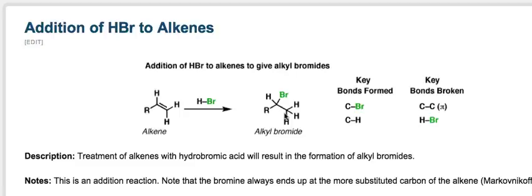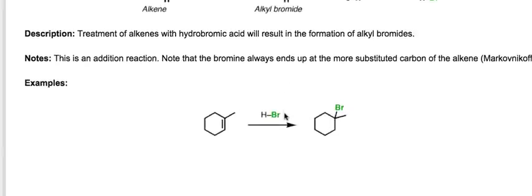Let's apply Markovnikov's rule to some examples. The first example is cyclohexene with a methyl group on top. The top part of the alkene has two carbons attached, making it the more substituted end. The bottom has one carbon and one hydrogen — the hydrogen is implicit, or hidden. According to Markovnikov's rule, bromine ends up on the more substituted top end, and hydrogen ends up on the less substituted bottom end.